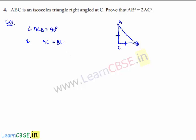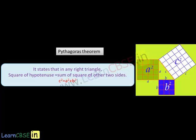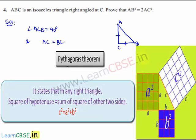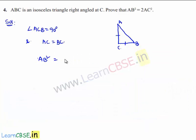In a right angle triangle, from the Pythagorean theorem, we know that the square of the hypotenuse is equal to the sum of squares of the other two sides. So here we get hypotenuse square, that is AB square, is equal to the sum of squares of the other two sides, that is AC square plus BC square.